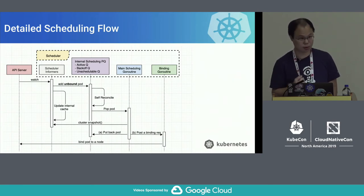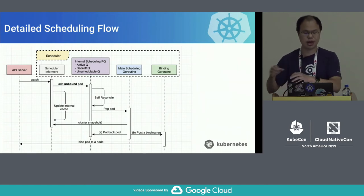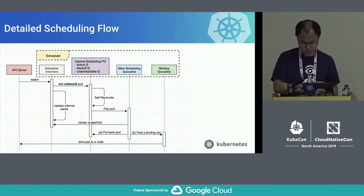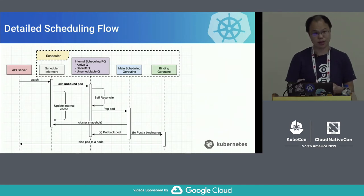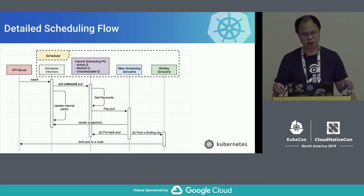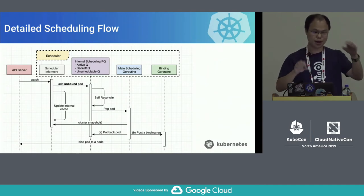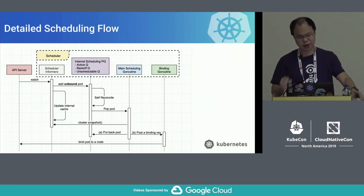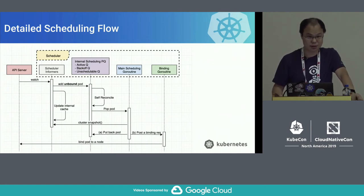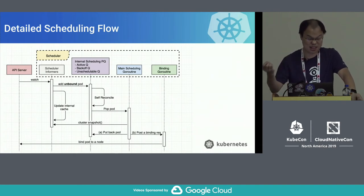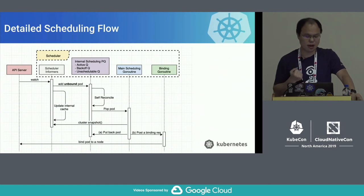The second component is the queue. You can think of it as one queue, but internally it has sub-queues like an active queue, back-off queue, and unscheduled queue. We added priority and preemption as GA in 1.14. Before that, we maintained a simple FIFO queue. After introducing priority, we had to manage which pod has higher priority, so internally we use a priority queue. We also need to ensure fairness — higher priority pods don't always get scheduled first; lower priority pods also get their chance.